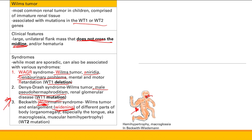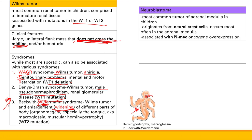Wilms tumor is most often sporadic. The key feature: it is a flank mass that does not cross the midline.